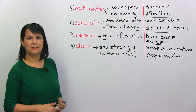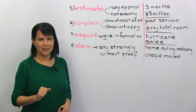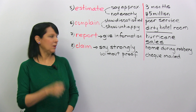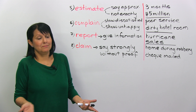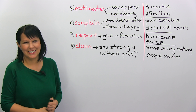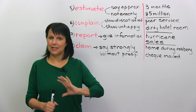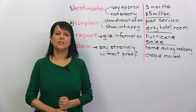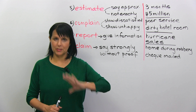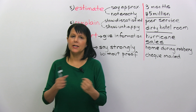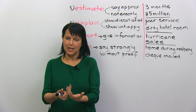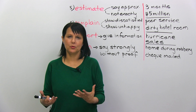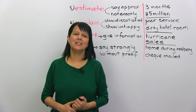To review: estimate — roughly, not sure; complain — dissatisfied; report — giving information; claim — saying something without proof. If you want to master these eight words you can use instead of 'say,' please go to our website at www.engvid.com where you can do a quiz to be sure exactly how they're used. And don't forget to subscribe to my YouTube channel so you can continue to improve your English. Thanks very much for watching. Bye for now.